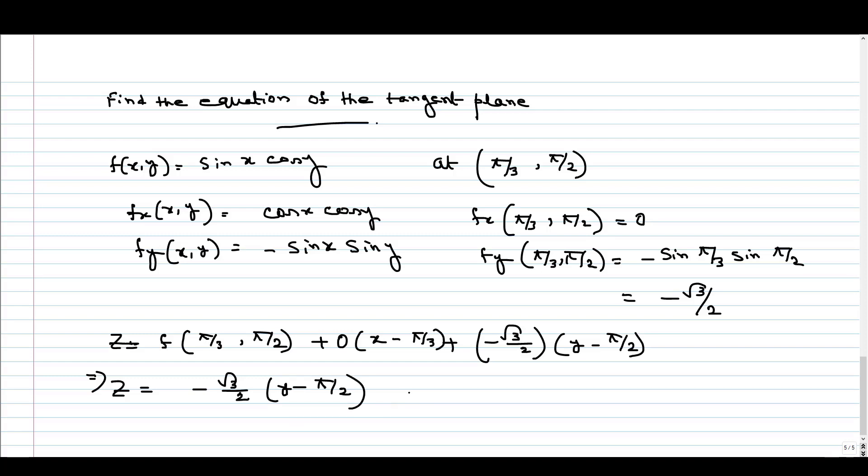Simplifying, we get -√3/2(y - π/2) = -√3/2 y + π√3/4. Multiplying through by 4, we obtain 4z = π√3 - 2√3y. This is the equation of the tangent plane.